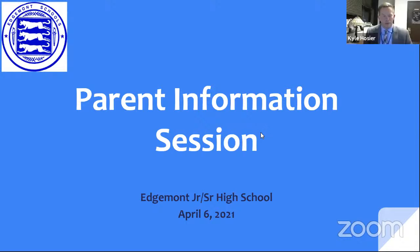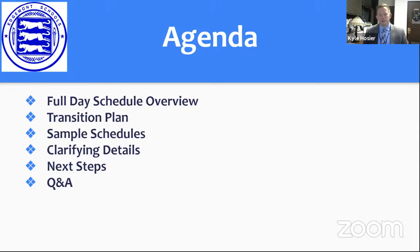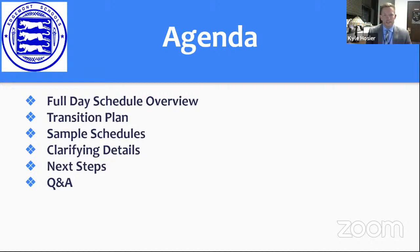We're excited to talk with you tonight about that plan and to answer your questions. Yesterday we sent out a communication as a broad overview of our plan for the remainder of the year. Tonight we'll highlight details related to the full day plan and the new revised six-period schedule, talk about the transition plan, review sample schedules, clarify details related to the remote option and lunch, discuss next steps, and finish with questions and answers. You can submit questions using the Google form from yesterday's email.